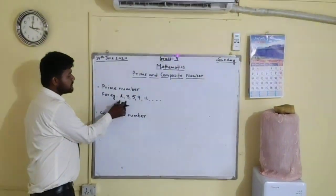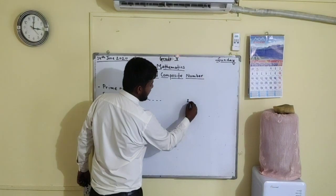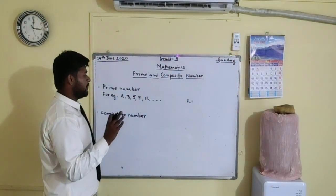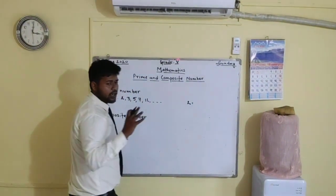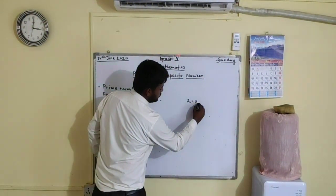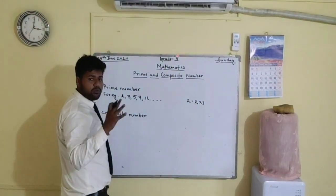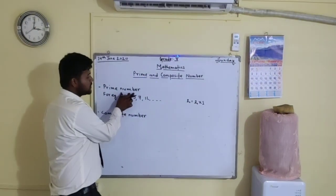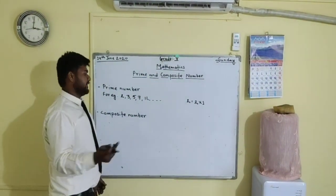How is 2 a prime number? This 2 is a prime number because it is divisible by two numbers only, that is one and itself, or it has got only two factors. So 2 and 1 — it has got only two factors. Prime numbers are those numbers which are divisible by one and itself only.